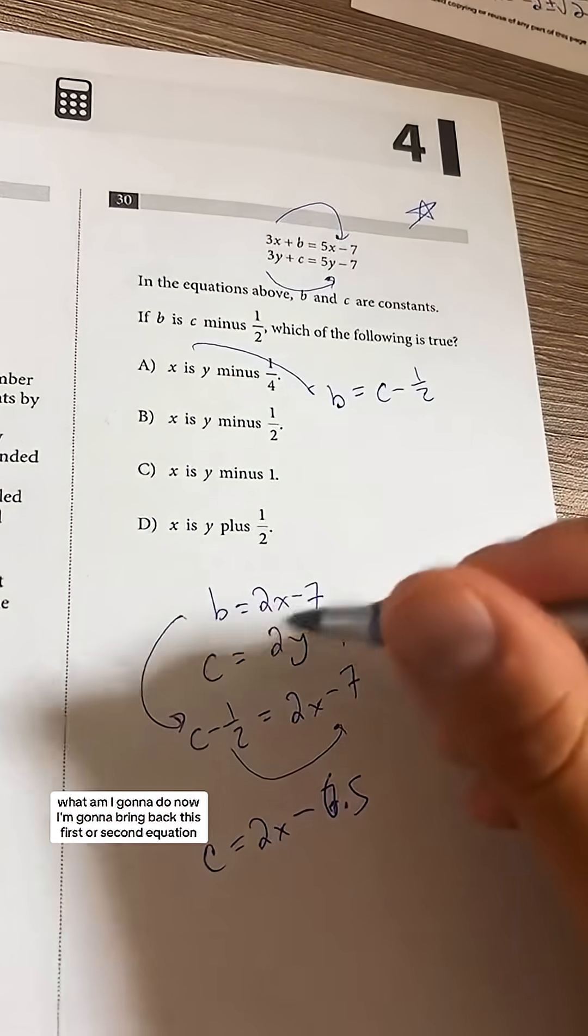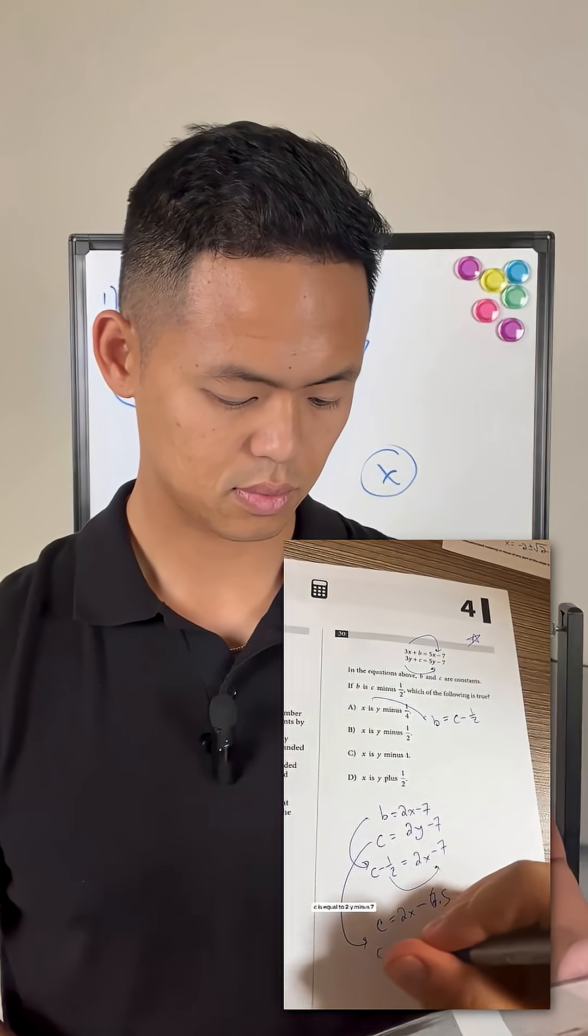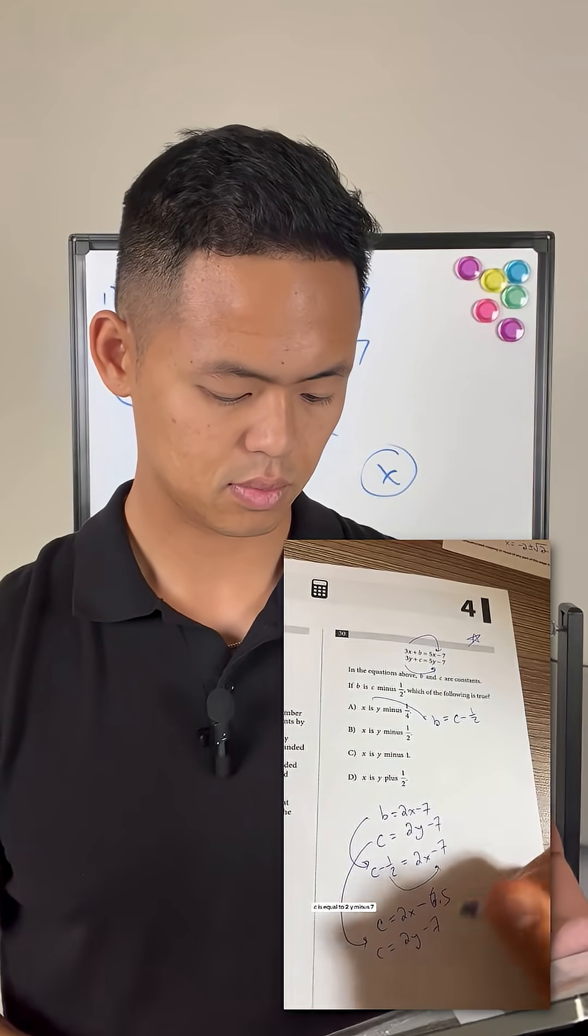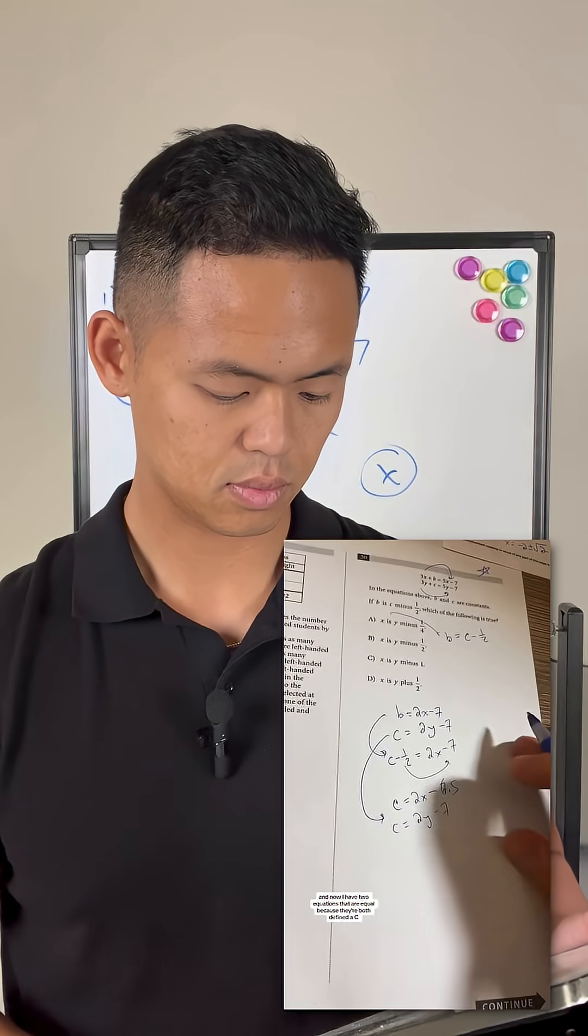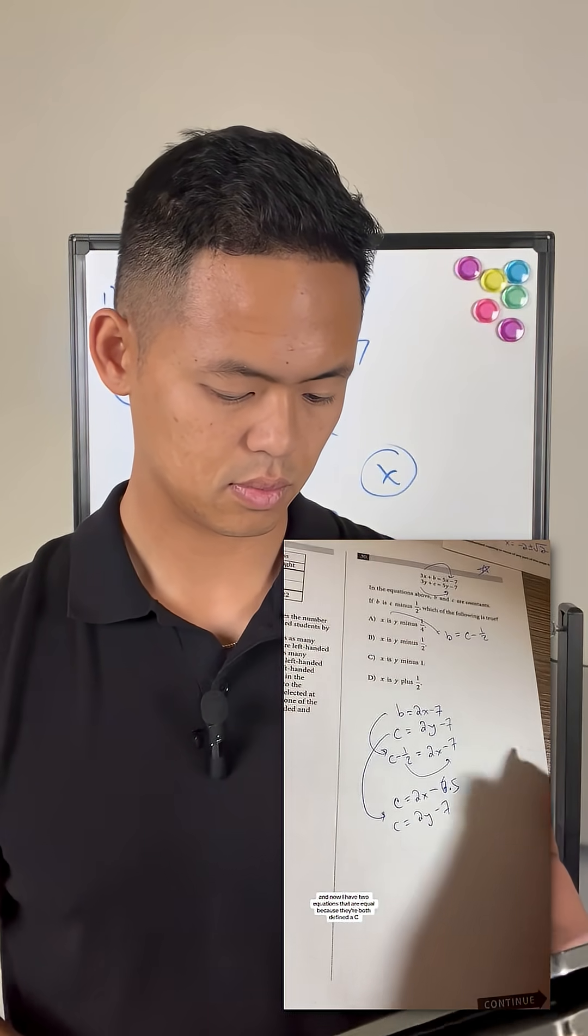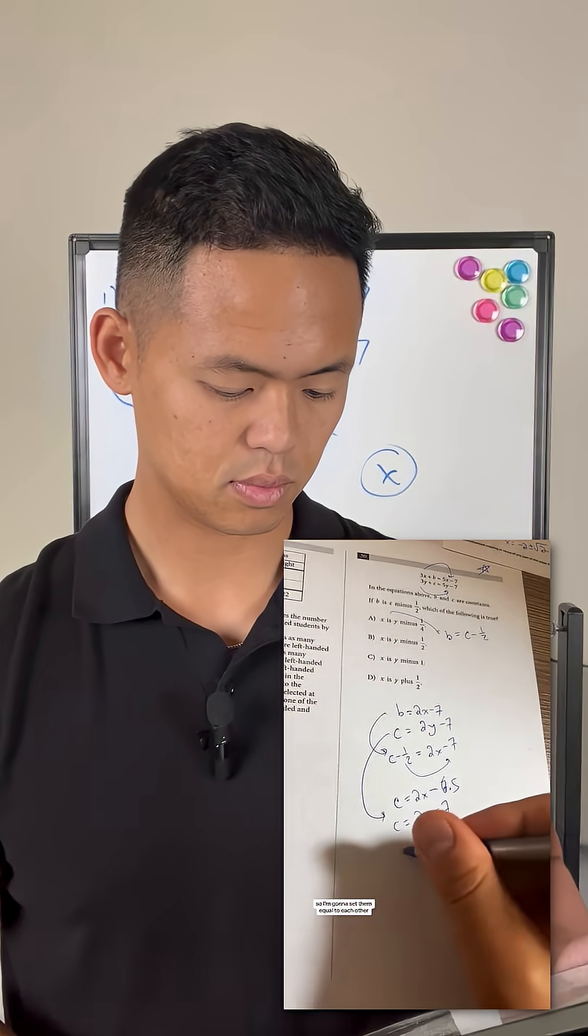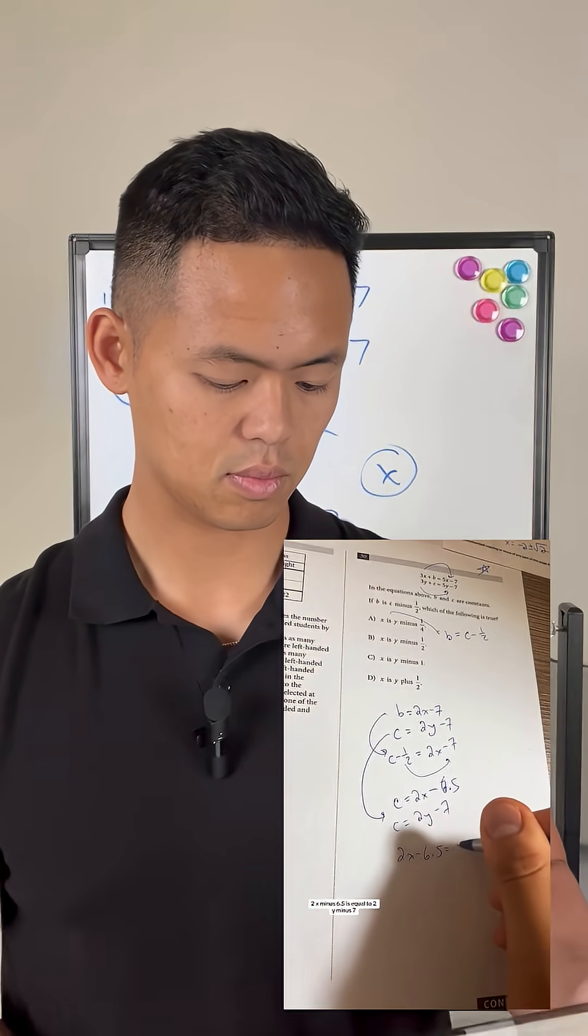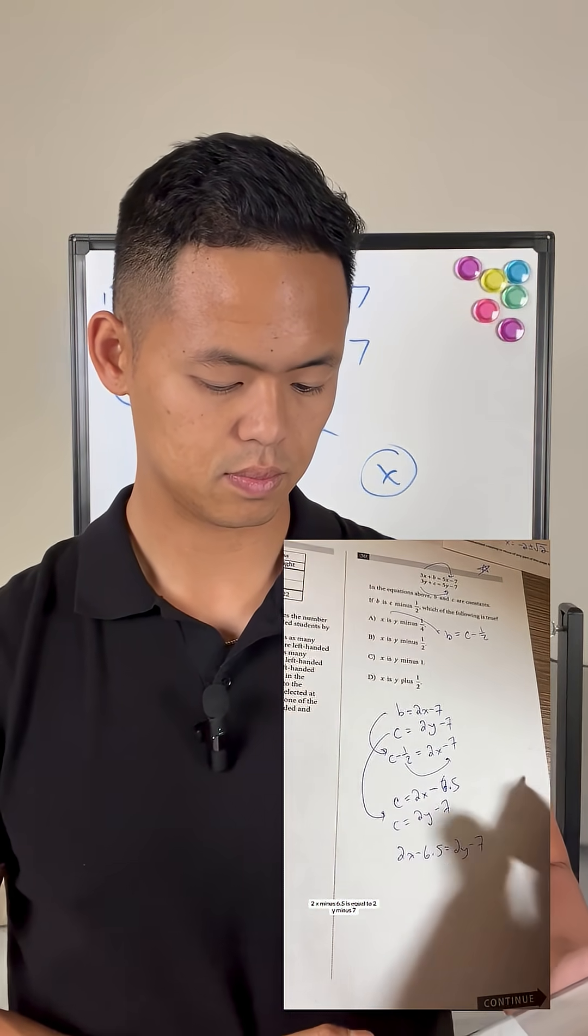I'm going to bring back this first or second equation. c is equal to 2y minus 7. And now I have two equations that are equal because they're both defined as c. So I'm going to set them equal to each other. 2x minus 6.5 is equal to 2y minus 7.